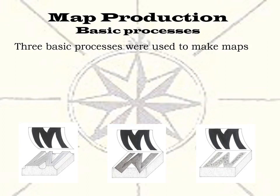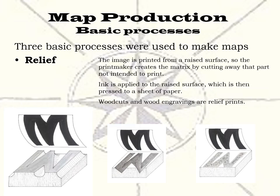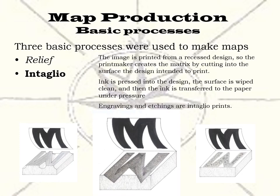So, how were printed maps produced? There were three basic processes used. The first type of map are those made by a relief process. In a relief map, the image is printed from the raised surface on the matrix, so the printmaker creates the matrix by cutting away that part which he does not want to show in the image. The ink is applied to the raised surface of the matrix, which is then pressed onto a sheet of paper. Examples of relief prints are woodcuts and wood engravings.